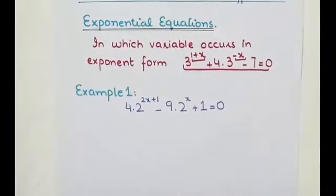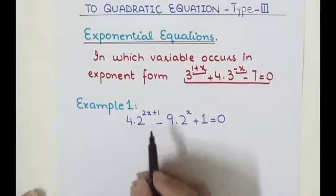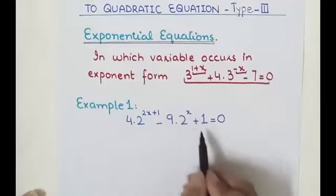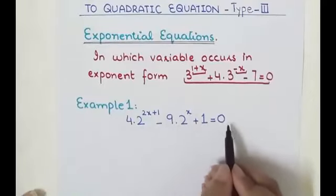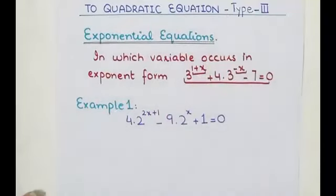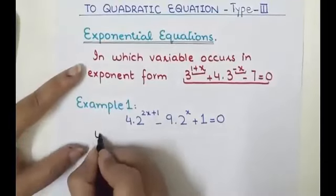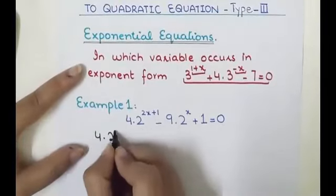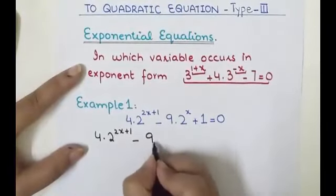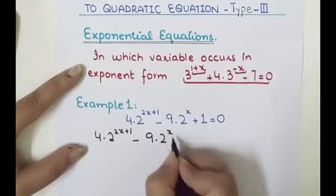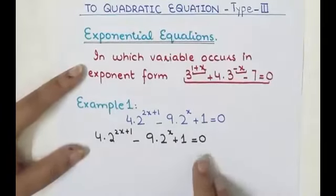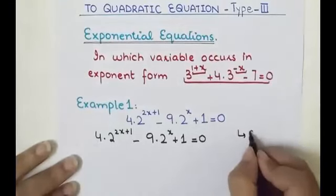Example 1: 4·2^(2x+1) - 9·2^(x+1) = 0. We will reduce this equation to a quadratic equation. We have 4·2^(2x+1) - 9·2^(x+1) = 0. Remember: when bases are the same, we can add their powers.